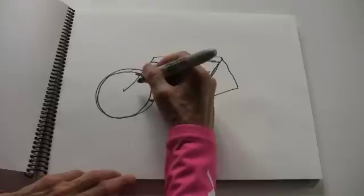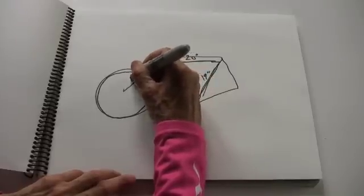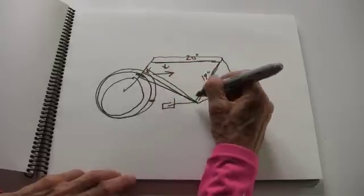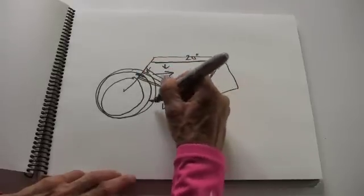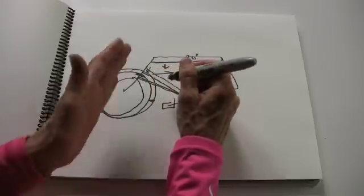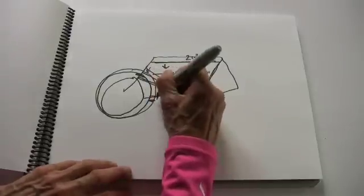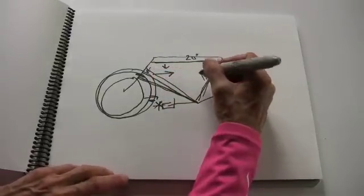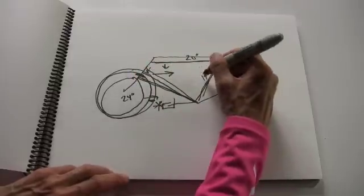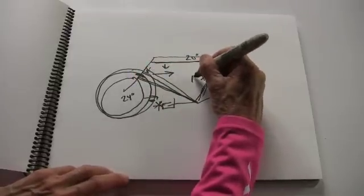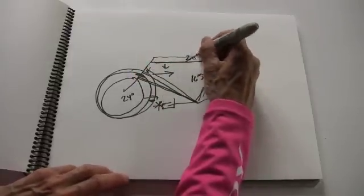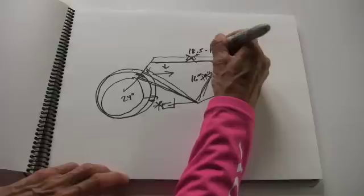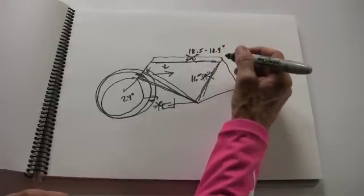But look what happens if I go all the way to a 24-inch front wheel. Now, I've got a front wheel that's somewhere down here. Now, I can really bring the down tube quite a bit, down quite a bit. And I can really move the front of the bicycle towards the rear quite a bit without having interference in this area. It's not untypical to see bicycles that use 24-inch front wheels with seat tubes of around 16 inches, with top tubes under 19 inches, 18.5 to maybe 18.9 inches. It's really, really short.